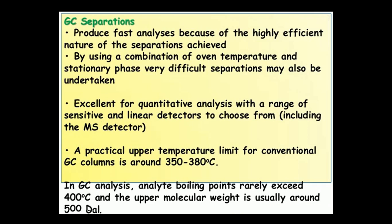GC separation produces fast analysis because of the highly efficient nature of separations achieved. By using a combination of oven temperature and stationary phase, very difficult separations may also be undertaken. Excellent for quantitative analysis with a range of sensitive and linear detectors to choose from, including the MS detector. A practical upper temperature limit for conventional GC columns is around 350-380°C. In GC analysis, analyte boiling points rarely exceed 400°C, and that's why volatile oils are ideal for GCMS analysis. The upper molecular weight is usually around 500 Dalton.